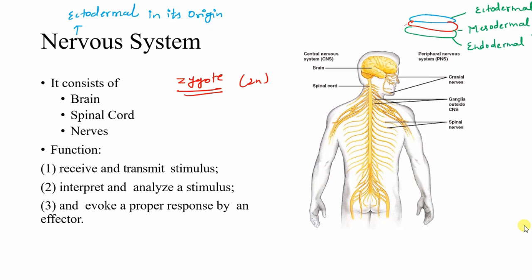The nervous system consists of two main parts: the brain and the spinal cord. The brain has three parts: forebrain, midbrain, and hindbrain. The anterior portion of the nerve cord forms the brain with three swellings — prosencephalon, mesencephalon, and rhombencephalon — forming forebrain, midbrain, and hindbrain respectively. The posterior portion becomes the spinal cord.